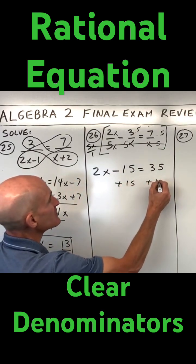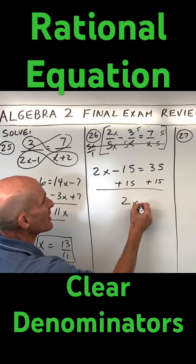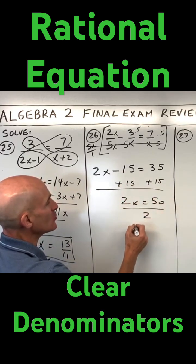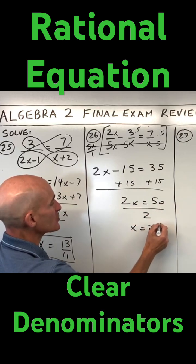We're just going to add 15 to both sides. That gives us 2x is equal to 50.